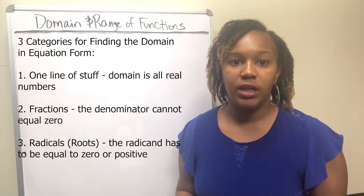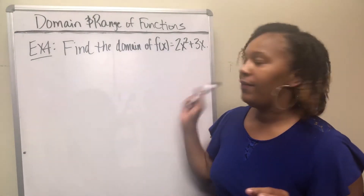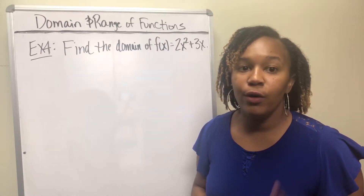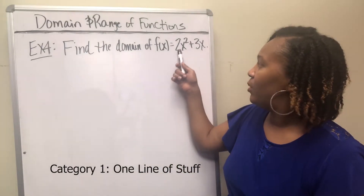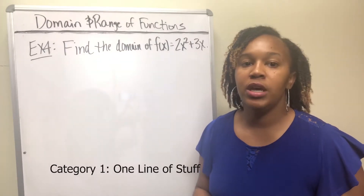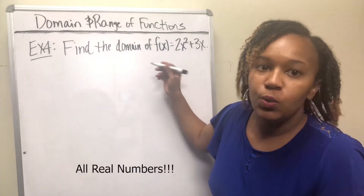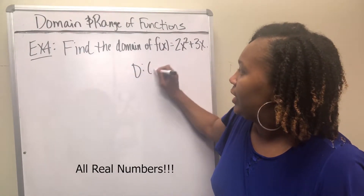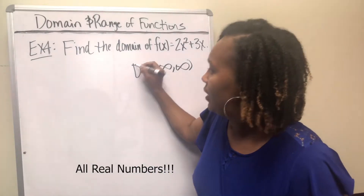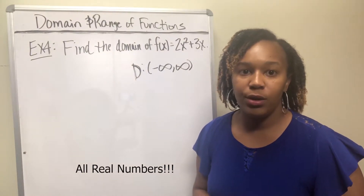Example four: we want to find the domain of f(x) = 2x² + 3x. This function fits into the category of one line of stuff — just one line of numbers, variables, and exponents. There are no fractions and no radicals, so there are no restrictions. Your domain is simply going to be all real numbers, written as negative infinity to positive infinity. Whenever you have just one line of stuff, your domain will always be all real numbers.